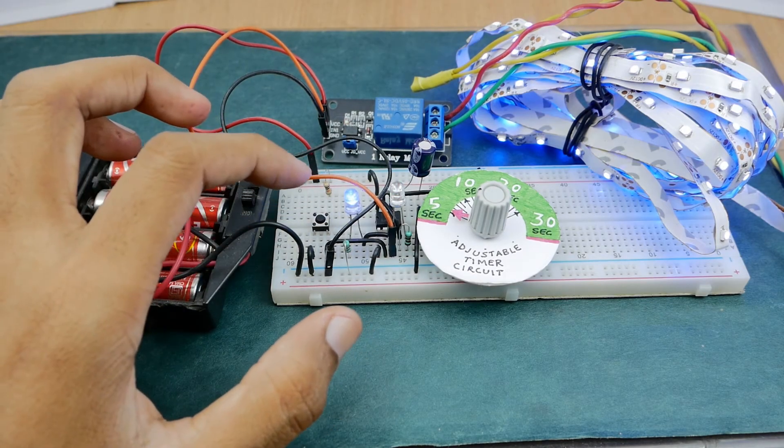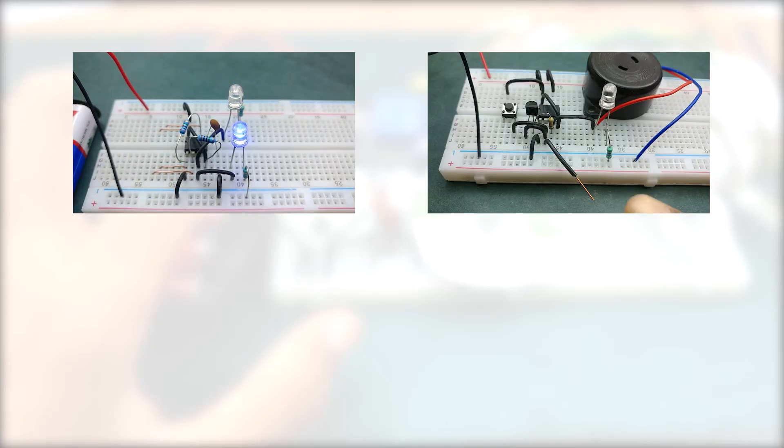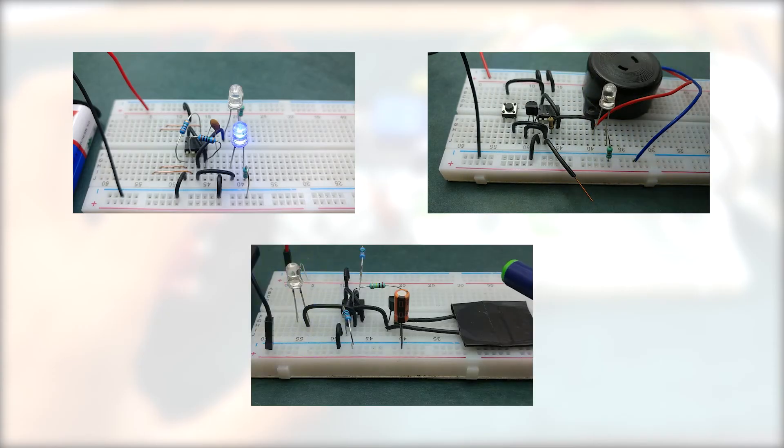Let's now try to understand how this circuit works. In the previous tutorials of our 555 timer project series, we have learnt how the trigger pin, pin 2 and the threshold pin, pin 6 of the 555 timer IC sense voltages and control the output. And this is a quick recap.